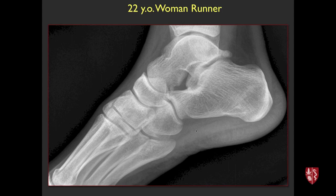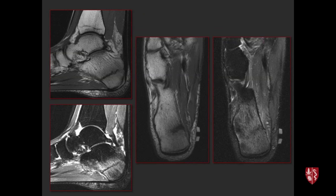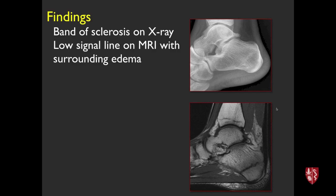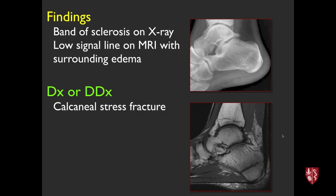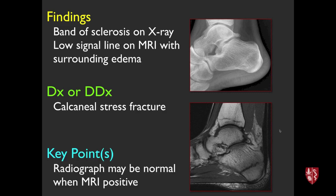22-year-old woman runner with heel pain. Radiographs show a band of sclerosis; MRI shows a low-signal line with a lot of surrounding edema on T2 — a calcaneal stress fracture. Key point: radiographs may still be normal when MRI is already abnormal. MRI is much more sensitive. When radiographs are positive, they tend to show this band of somewhat ill-defined sclerosis from little calluses along the trabeculae.